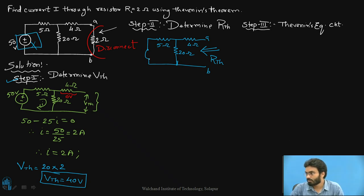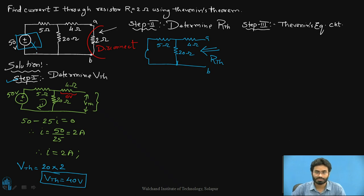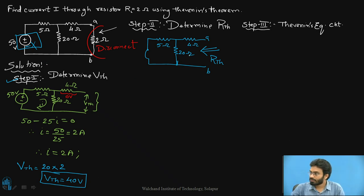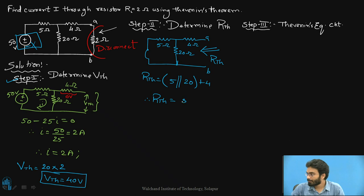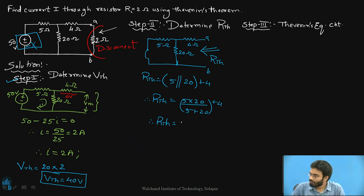We consider that all sources present in a given linear circuit are ideal. When we say independent voltage sources are ideal, they have an internal resistance RS equal to 0. So this is equivalent to replacing the voltage source with its own internal resistance of 0 ohms. RTH is therefore 5 ohms in parallel with 20 ohms, and this whole combination is in series with 4 ohms. After simplification, RTH equals 8 ohms.